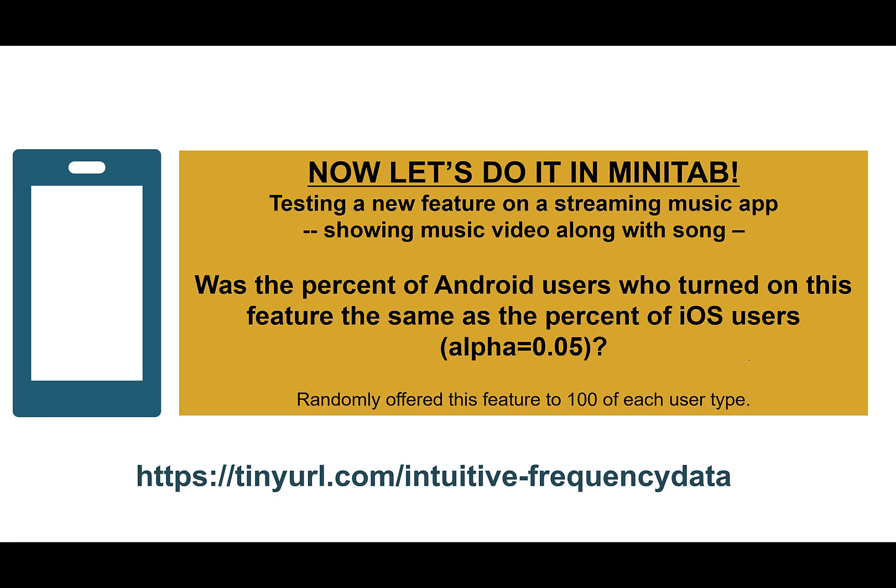All right, now we're going to do this in Minitab. The example we're going to use is this Android versus iOS users, where we had 100 people that we randomly offered this new feature to that were Android users, and 100 people that were iOS users. We wanted to see if the proportions that turned it on were the same. The data is available at the URL shown below.